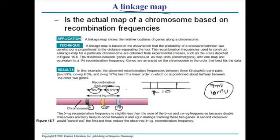From these recombination frequencies we can determine where these genes are located on the chromosome of Drosophila. This really helps us determine where genes are located not only in Drosophila but in many other important organisms as well.